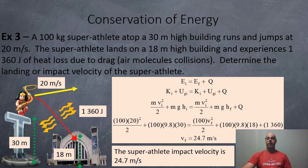Example three. So now this is where trying to use the force solution just would not work. You pretty much have to use an energy solution. So here we have a 100 kilogram super athlete atop a 30 meter high building. And this person is going to run and jump at 20 meters per second. The super athlete is going to land on an 18 meter high building and experience heat loss of 1,360 joules. So as you're falling, you're pushing air molecules out of the way and giving thermal energy to the air molecules.